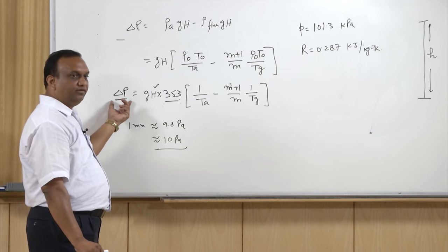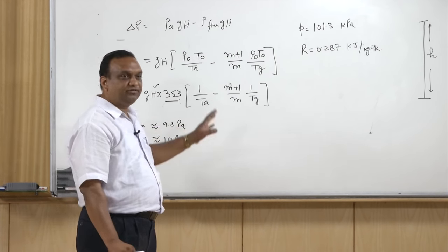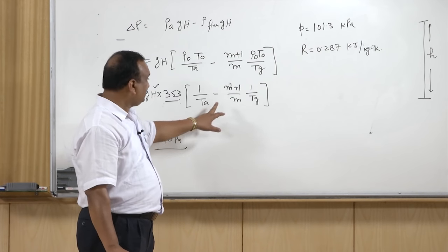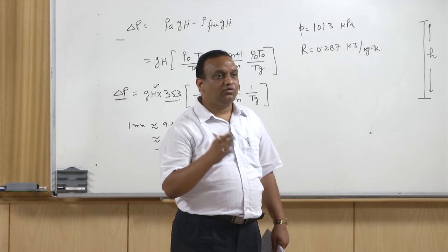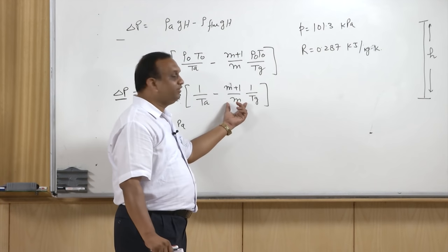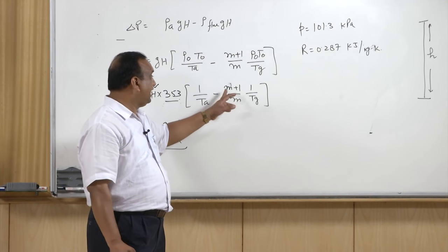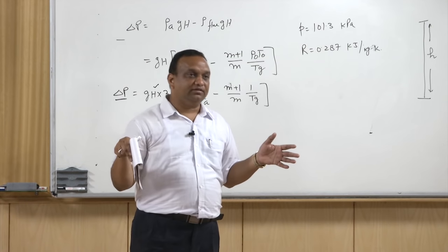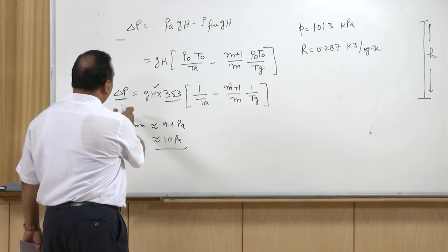This expression gives the draft developed in a chimney of height H as a function of T_G, T_A, and the ratio (m+1)/m. If identical boilers are added or more fuel is burned, this ratio remains the same, so the required chimney height stays constant for the same pressure difference. Only the cross-sectional area of the chimney increases to accommodate more flue gases.